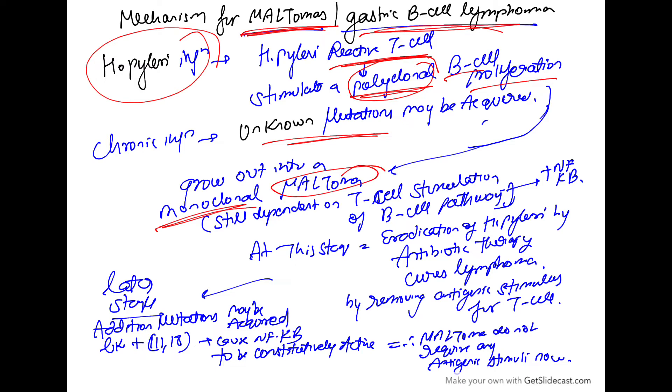But this monoclonal MALToma is still dependent upon T cell stimulation for the B cell pathway of stimulation of NF-kappa B. Still, the NF-kappa B stimulation depends on T cell stimulation. So, this B cell growth depends on continuous T cell stimulation.